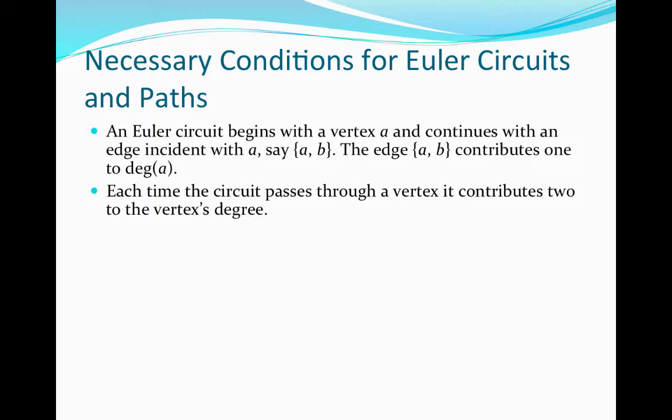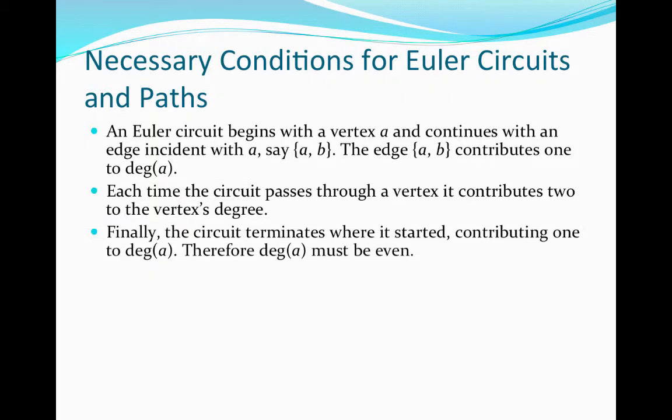After we've traveled all of the edges, we need to come back to our original vertex A. This provides the additional degree from the original degree of 1 for the edge that left vertex A. So by coming back to A again, we know that the degree of A must be even — it will be at least 2.